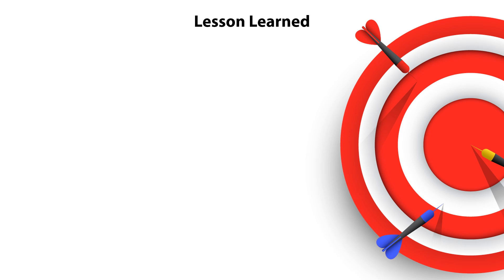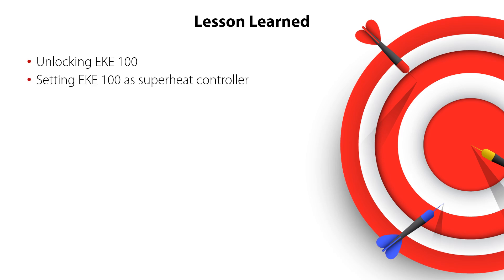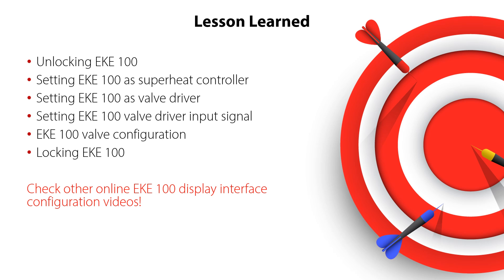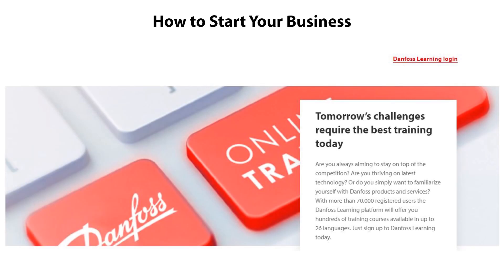You have now completed display interface configuration video 2 for the EKE100 superheat controllers and valve drivers. You now know how to unlock the EKE100, set it as a superheat controller or valve driver, set the valve driver input signal, do the valve configuration, and lock the EKE100 again after completing the settings — all ensuring correct and safe system operation. Please check out the other online videos about EKE100 display interface configuration and other Danfoss EKE100 resources. Thanks for watching.